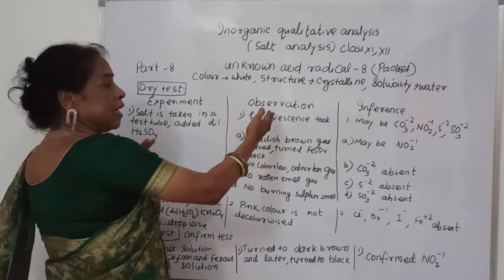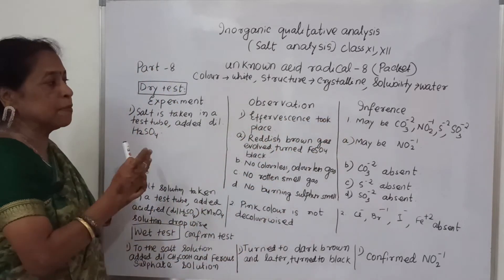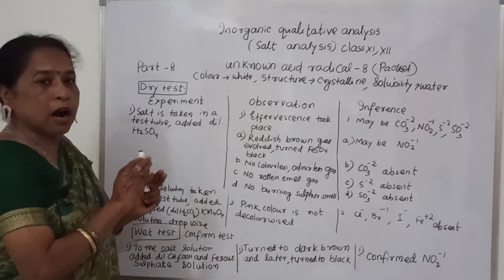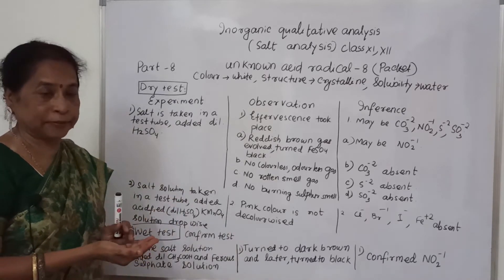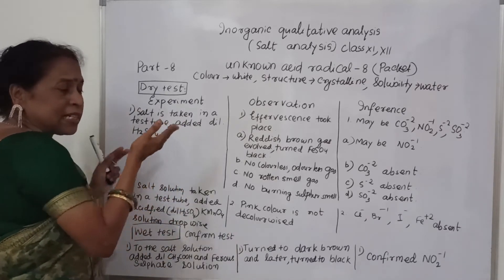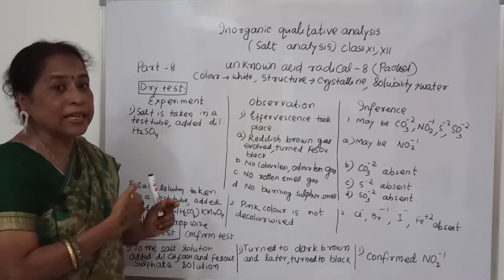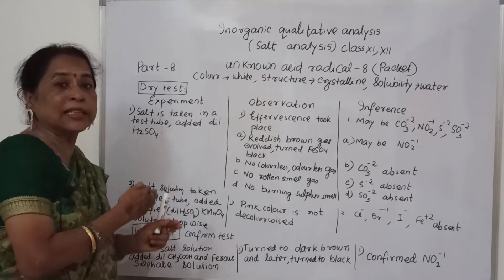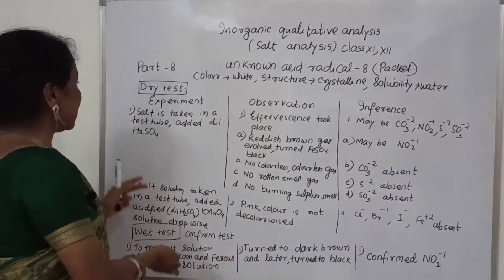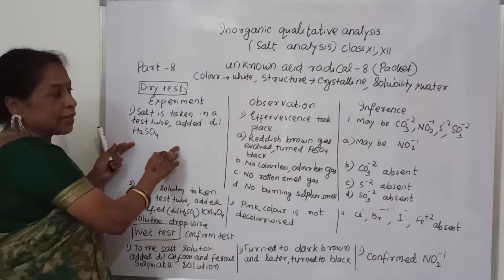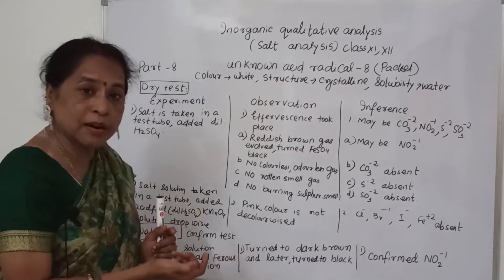When effervescence takes place, the inference may be carbonate, nitrite, sulfide, or sulfite. By the color and odor of the gas, I have to determine which radical is present and which are not. The first group contains carbonate, nitrite, sulfide, and sulfite.